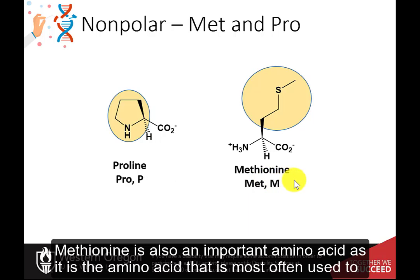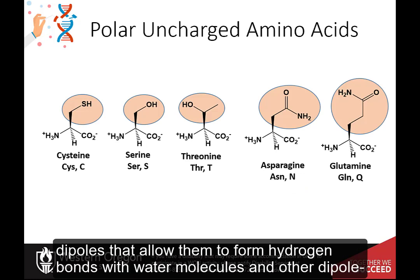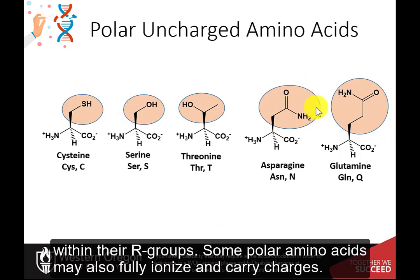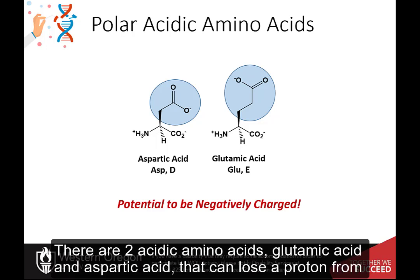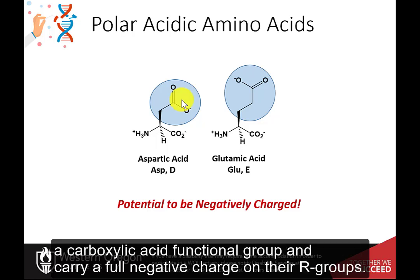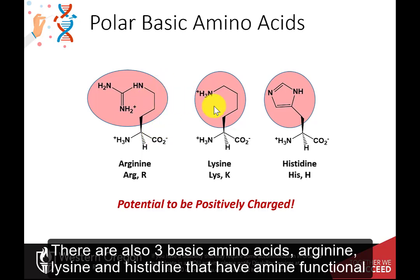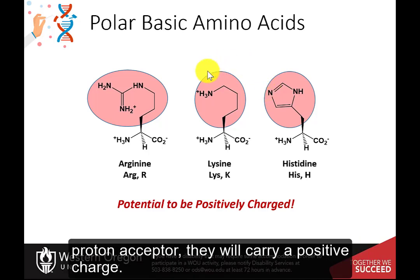Methionine is also an important amino acid, as it is the amino acid most often used to begin the translation of a protein. The polar, uncharged amino acids carry permanent dipoles that allow them to form hydrogen bonds with water molecules and other dipole-dipole interactions. These include amino acids that contain alcohols, thiols, and amides within their R groups. Some polar amino acids may also fully ionize and carry charges. There are two acidic amino acids, glutamic acid and aspartic acid, which can lose a proton from a carboxylic acid functional group and carry a full negative charge on their R groups. There are also three basic amino acids — arginine, lysine, and histidine — that have amine functional groups that can serve as a proton acceptor and act as a Lewis base. When they serve as a proton acceptor, they will carry a positive charge.